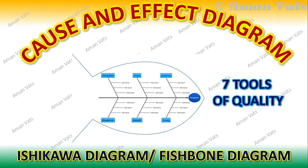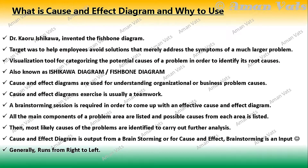I have already explained about the seven tools of quality overview and also about the process flow diagram in previous videos. In this video, I'm going to talk about cause and effect diagram. This diagram is also known as Ishikawa diagram or fishbone diagram, so if you encounter any of these three terms, the result is the same — you must understand all three terminologies.